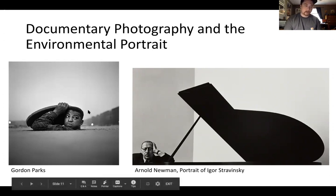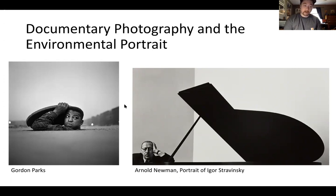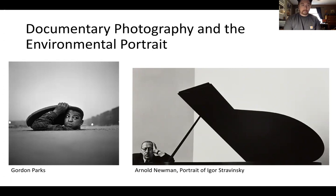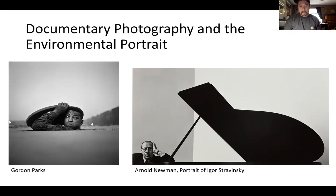On the left we have a Gordon Parks image called 'Emerging Man.' It's a play on Ralph Ellison's 'Invisible Man.' Black individuals in the mid-20th century weren't feeling human because of Jim Crow and the lack of civil rights. So instead of invisible, the message is: I am emerging, I'm becoming visible. It's part of a photo essay Parks did in Harlem.